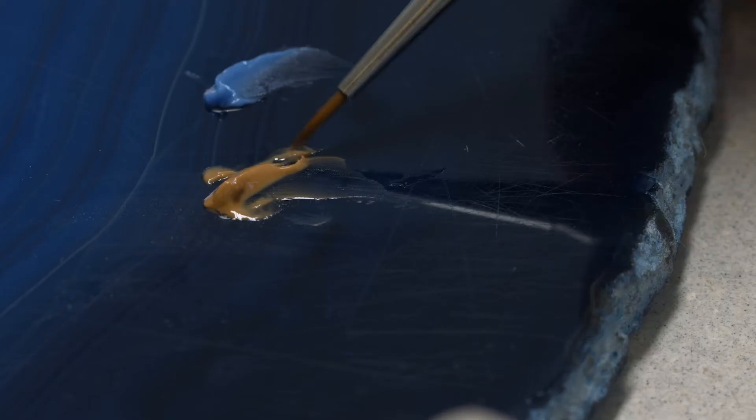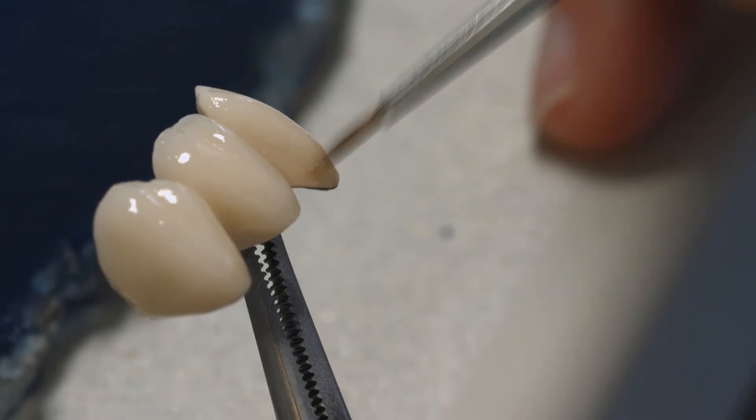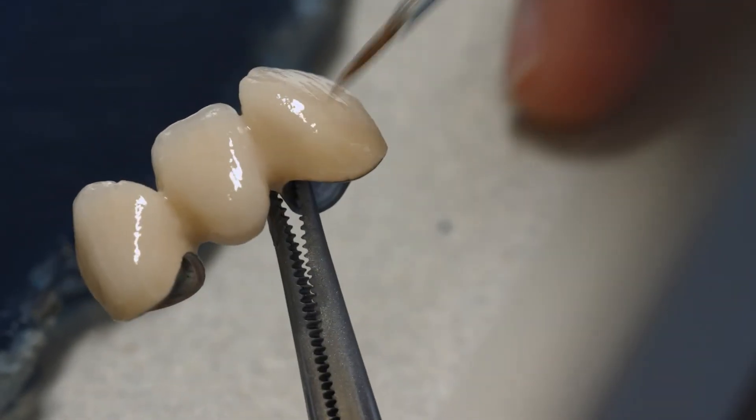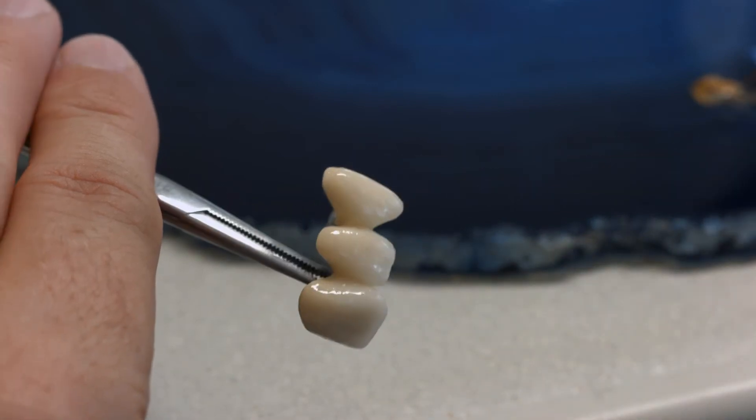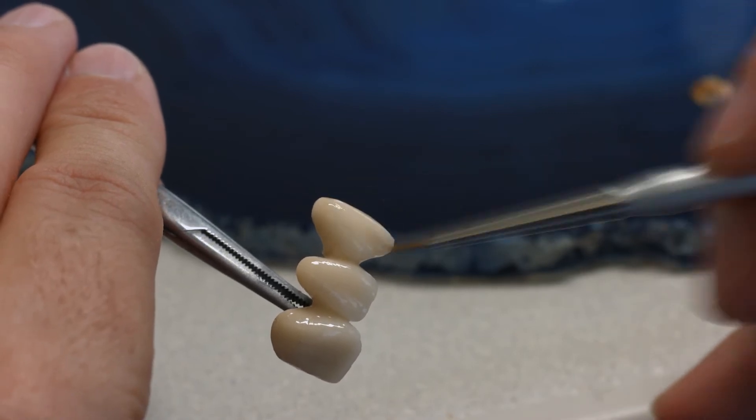Shade adjustments can be made with a suitable amount of the most appropriate IPS Ivocolor shade. Dilute these materials with IPS Ivocolor mixing liquid all round or long life to achieve the desired consistency.